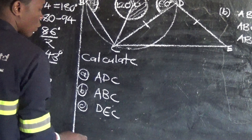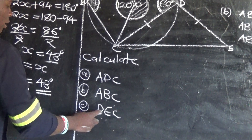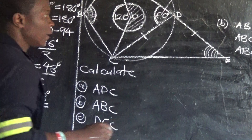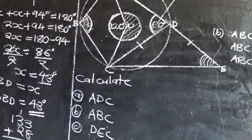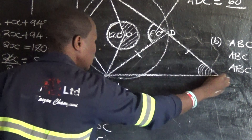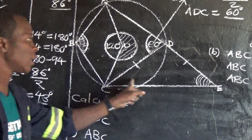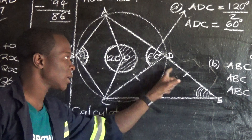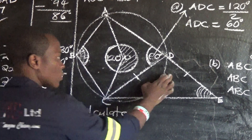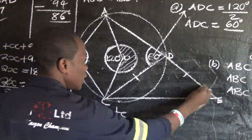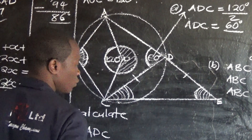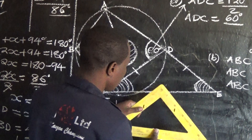The last part asks for angle DEC. Now, since CD equals DE, the triangle formed is isosceles. So the base angles of this triangle are equal — this angle and that angle are equal. Let me draw a sketch of this situation: we have A, D, E and C, where these two sides are equal and angle ADC is 60 degrees.